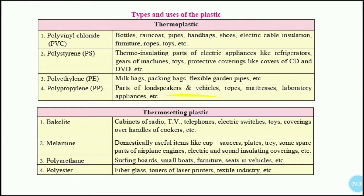There are also many types within thermoplastic and thermosetting, along with their uses, which are in your textbook. Examples of thermoplastics include polyvinyl chloride (PVC) used in bottles and raincoats, polystyrene, polyethylene, and polypropylene — used in flexible pipes, parts of loudspeakers, and vehicle components. Thermosetting examples include bakelite used in radio, TV, electric switches, and toys; and melamine used for cables and covering handles of cookers.